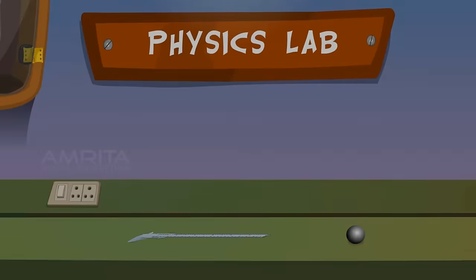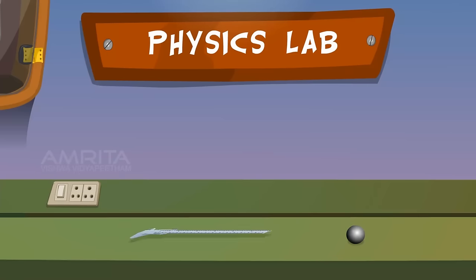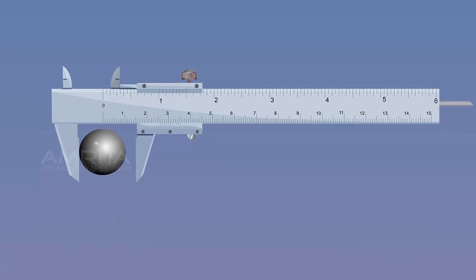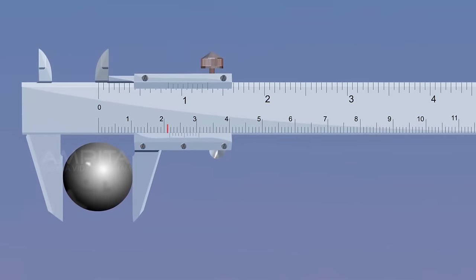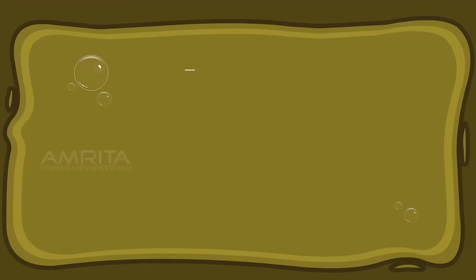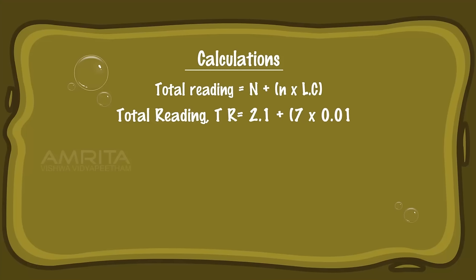Sphere. Materials required: Vernier Calipers and sphere. Take the Vernier Calipers. The sphere to be measured is placed in between the outer measuring jaws and held tight. Note the main scale reading and vernier scale reading. Total reading TR = MSR + (VSR × least count) = 2.1 + (7 × 0.01) = 2.17 cm.